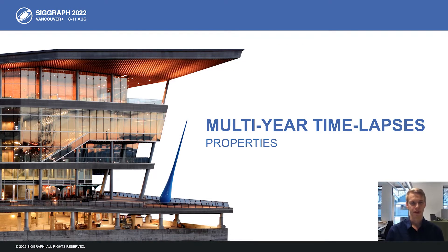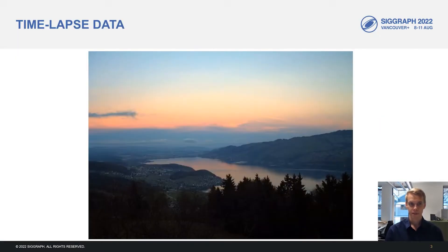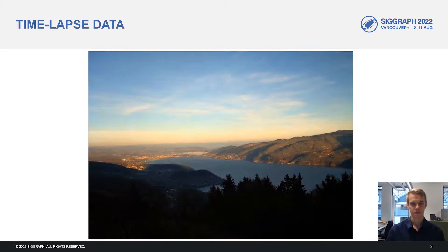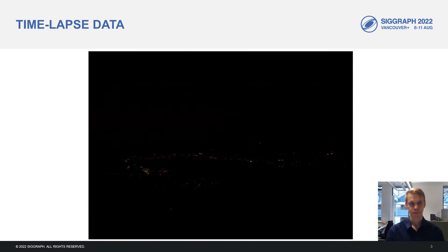In this work, we're primarily interested in multi-year time-lapses that have repeating day and year cycles. These are often captured by online webcams. Let's take a look at the typical properties of this kind of data. The webcams typically capture one frame every 30 minutes or so. And if these frames are played one after the other, we get the following result.